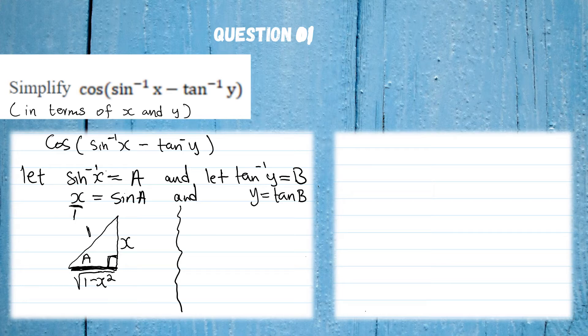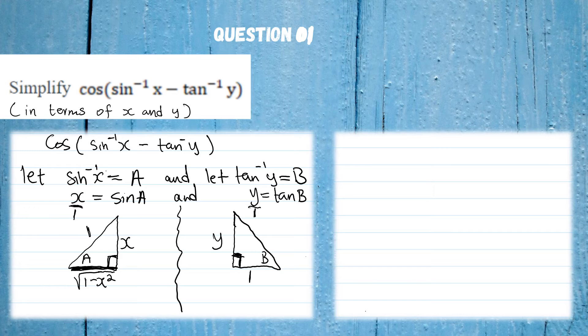Now for tan B = y, we draw another right-angle triangle. Tangent is opposite over adjacent, so opposite = y and adjacent = 1. We need to find the hypotenuse using the Pythagorean theorem: hypotenuse² = y² + 1², so hypotenuse = √(1 + y²). Now we have all three sides for angle B as well.